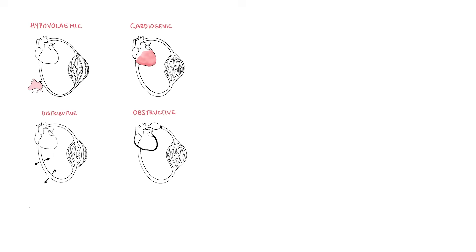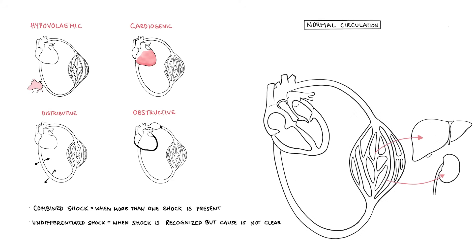Let's talk about the different types of shock and the causes. Remember shock can be categorized as hypovolemic, cardiogenic, obstructive or distributive shock. However it is possible for patients to have a combined shock where more than one type is present. Undifferentiated shock is when shock is recognized but the cause is not clear. Here is a schematic diagram representing the body circulation. The heart pumping blood around the body and the vessels contracting and dilating to maintain a normal blood pressure and organ perfusion. Remember the important relationship of mean arterial pressure is equal to cardiac output multiplied by total peripheral resistance.